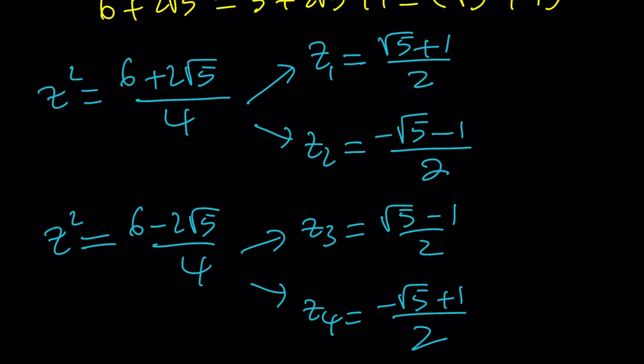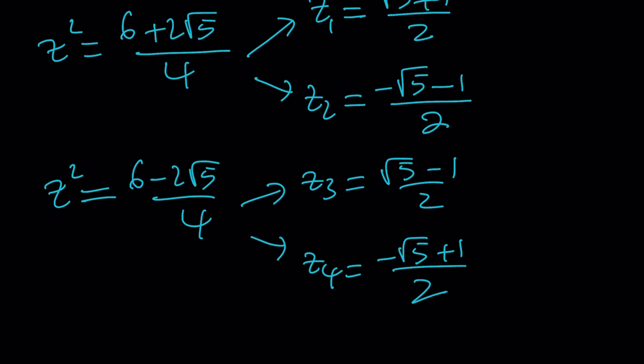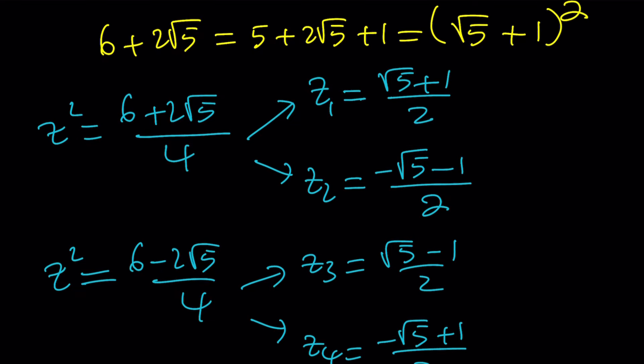Awesome. Now we've got 4 values and that pretty much solves the problem. These are all the solutions because it's a quartic it should have 4 complex solutions.